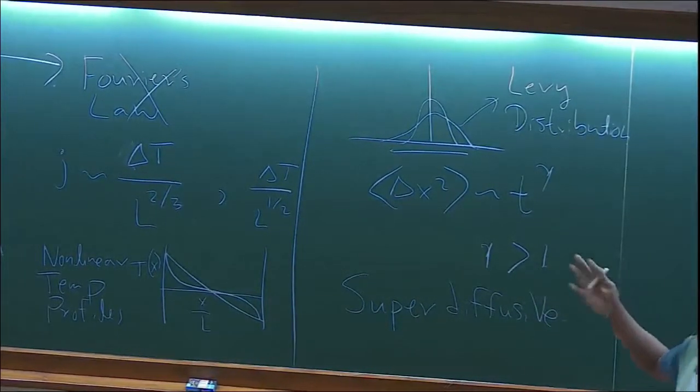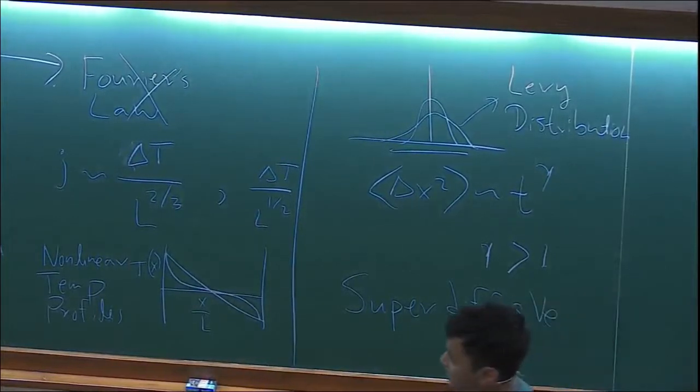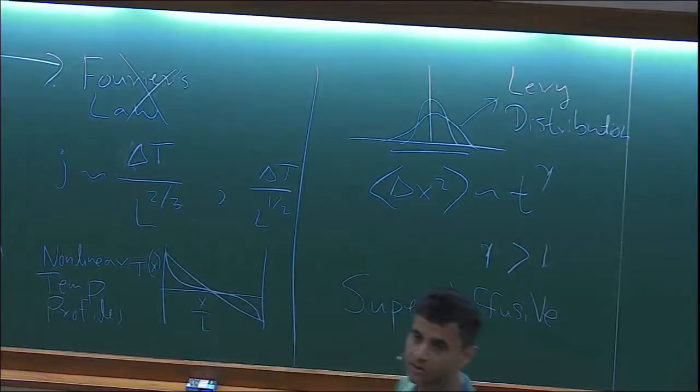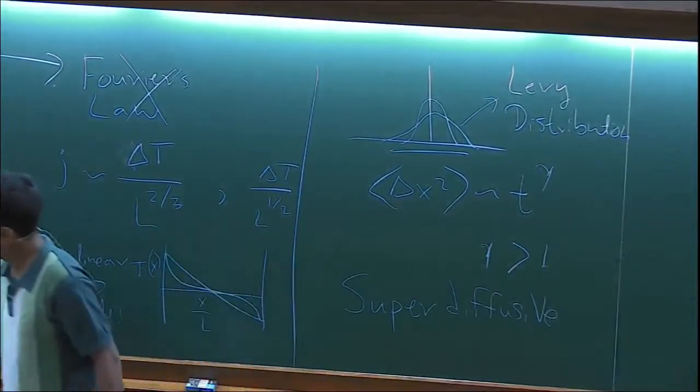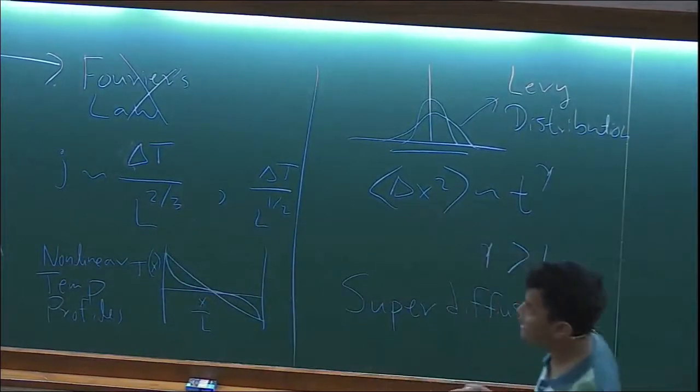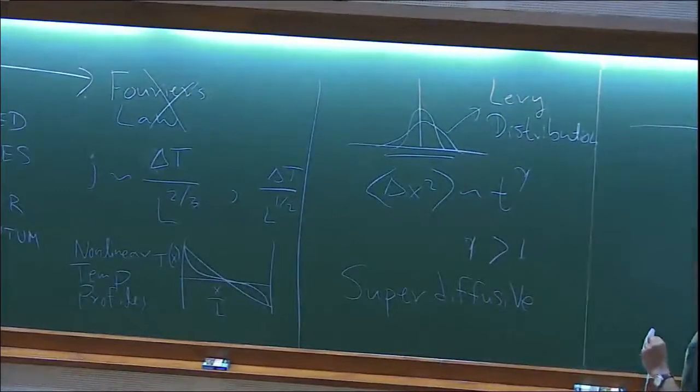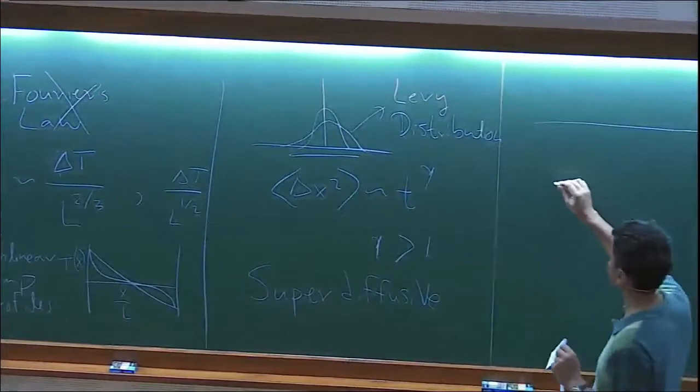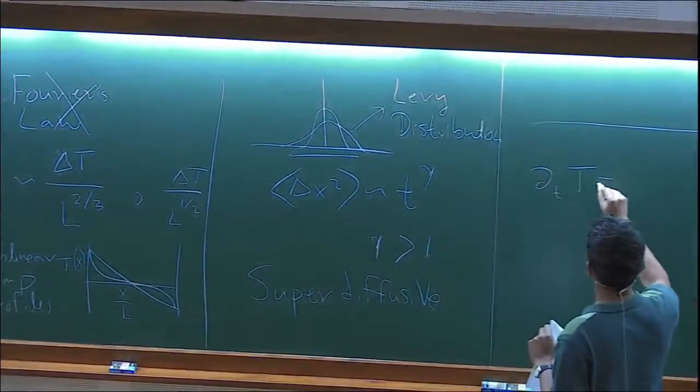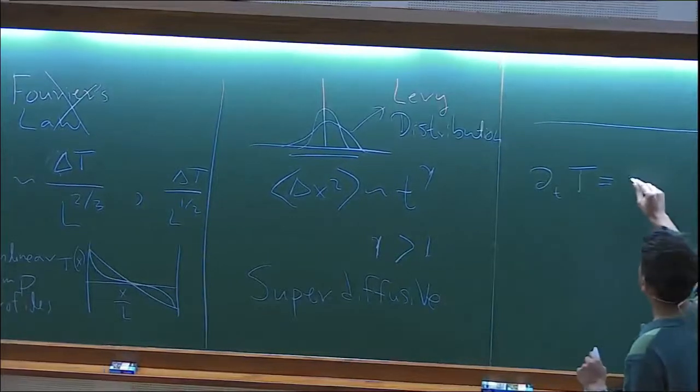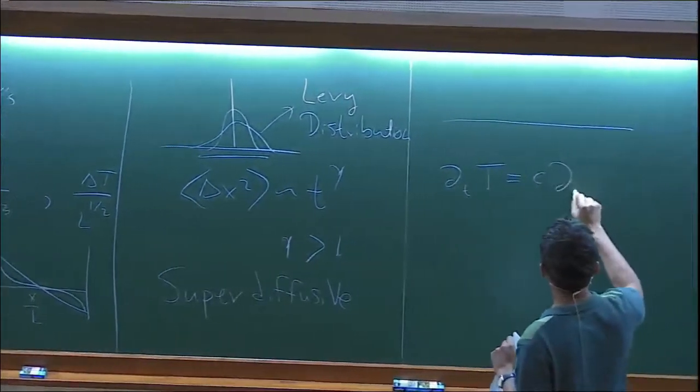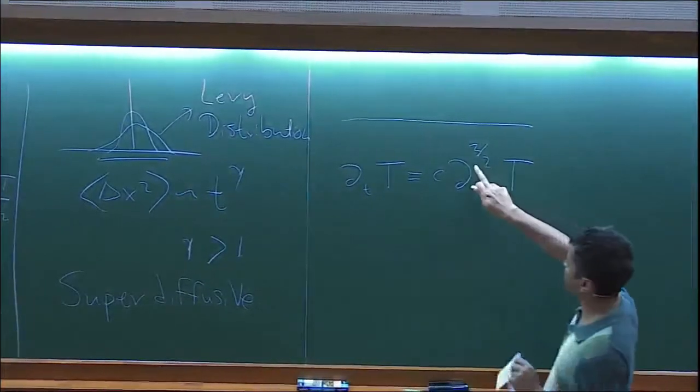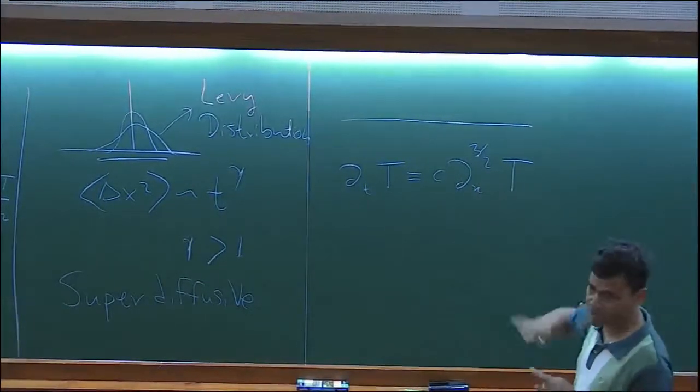And the size of this packet spreads as... These are various indications that transport is not normal. There's some indication that whatever heat carriers, they're not doing a random walk that would give diffusion, but they're doing what's called a Levy walk. In one of the models, this model, it was exactly shown mathematically that if you're on the infinite line, then the temperature satisfies what's called a fractional diffusion equation. The equation is del T temperature, instead of the diffusion equation, you have something like... There's some constant and then you have a fractional power here.